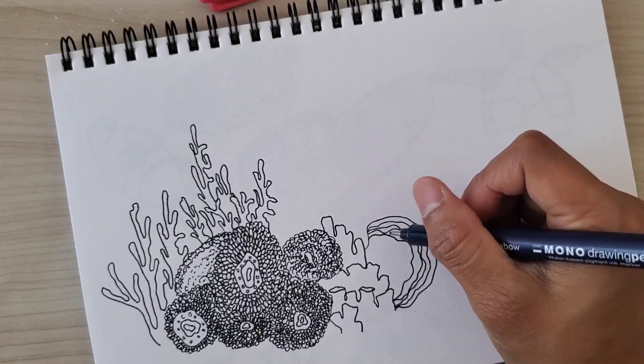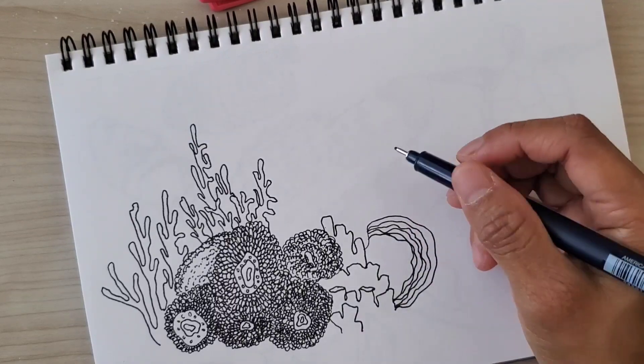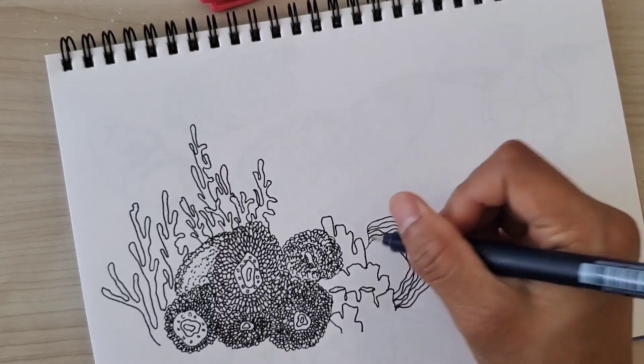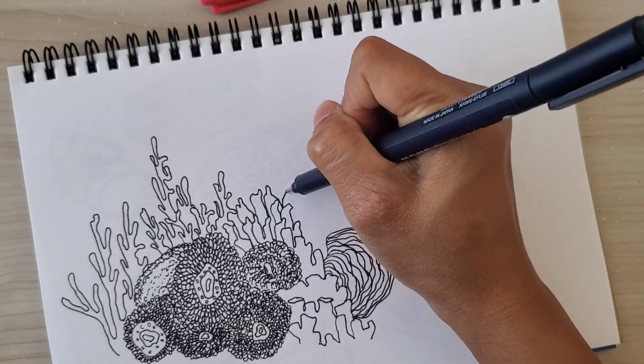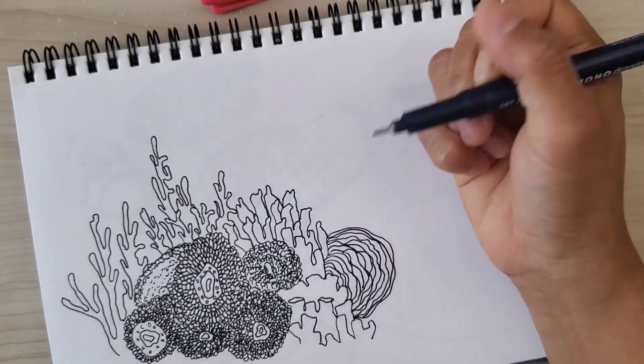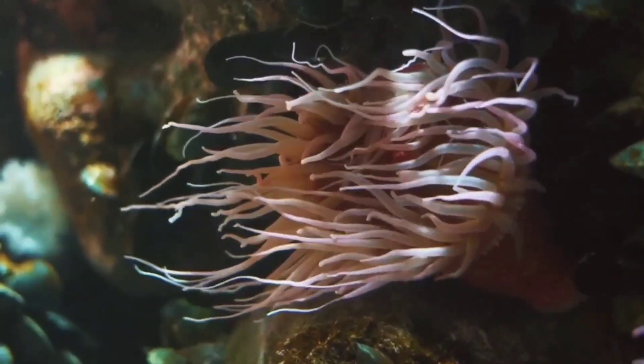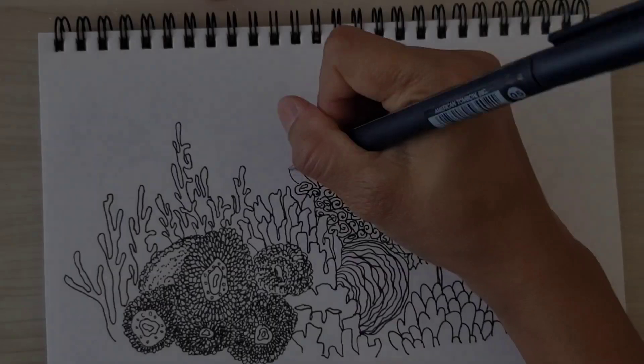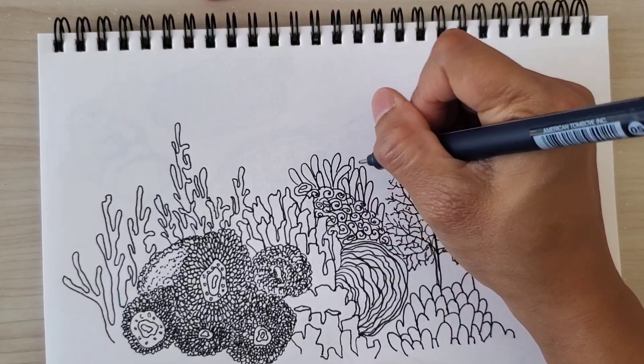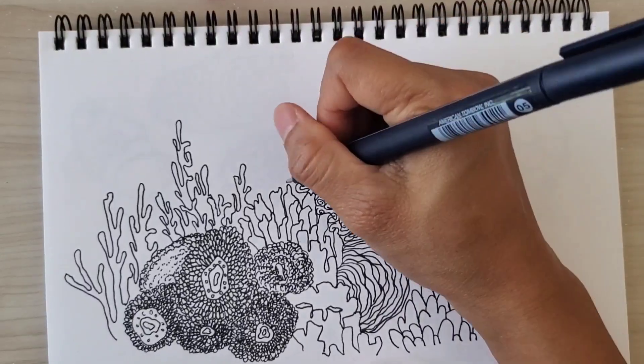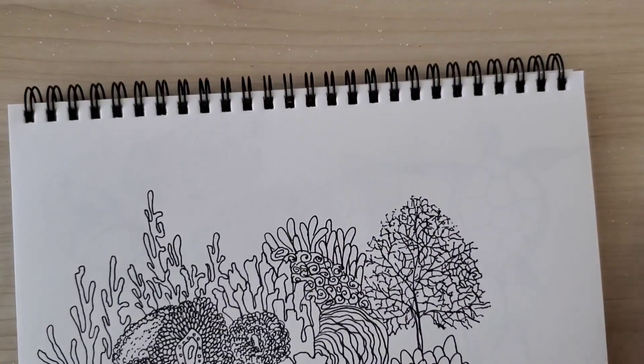For the fourth one, draw different kinds of sea plants and corals. So I'm here just drawing some coral reefs. If you watch my previous videos recently, I made a review for this specific pen, the Tombow Mono Drawing pen, and it's really great. I'm enjoying it right now.